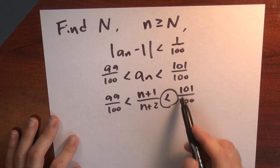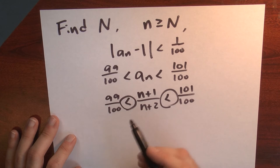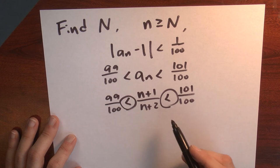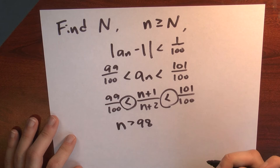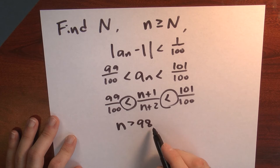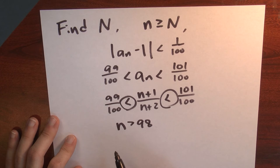This inequality, however, requires a little bit of work. I could solve here by multiplying both sides by (n+2) and by 100, and I'd end up finding that n needs to be at least 98. So as long as I choose a value for big N which is bigger than 98, that guarantees that this inequality holds. This inequality holds automatically, and that tells me that my nth term is really within a hundredth of 1.